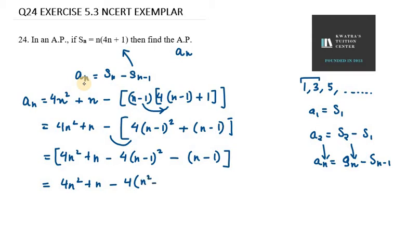So n square minus 2n plus 1 minus opening the brackets minus n. In the second one it will be plus 1. So now you have 4n square plus n.